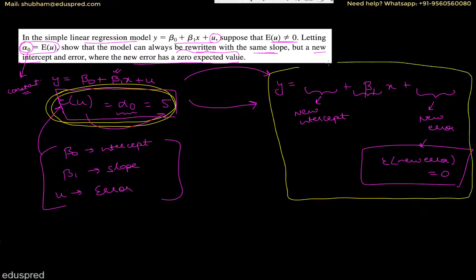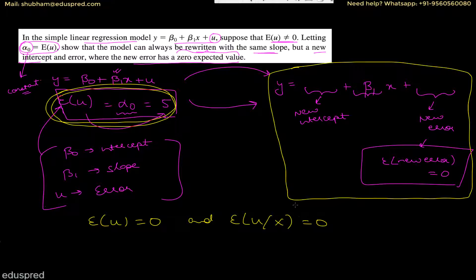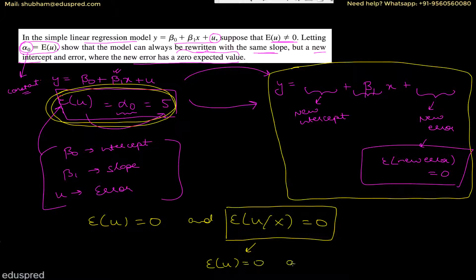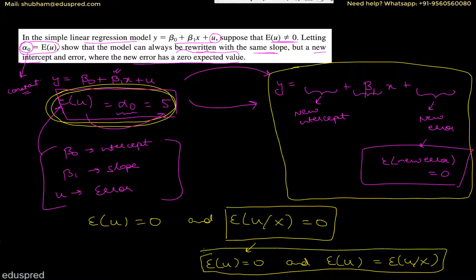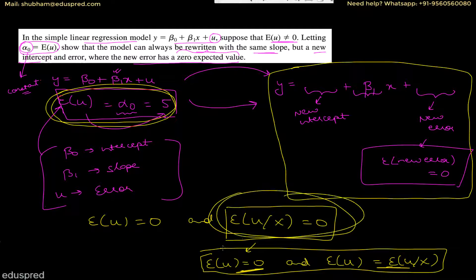We are going to apply some transformation that will solve the issue of the expected value of u not being zero. Before showing how, I want to clarify one thing: expected value of u equals zero and expected value of u given x equals zero are two different things. For the second to hold, you need both: expected value of u equals zero, and expected value of u equals expected value of u given x.